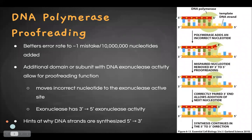DNA polymerase proofreading is one of the first steps that the cell goes through to try and better the error rate. Normally the error rate is about one mistake per 10,000–100,000 nucleotides added. With DNA polymerase proofreading, it becomes one mistake per 10 million nucleotides added, which is a significant improvement.